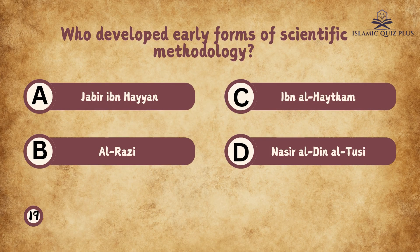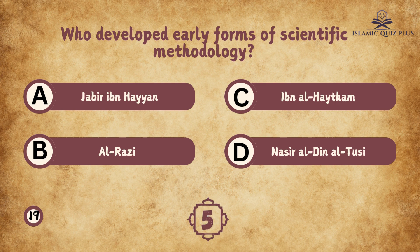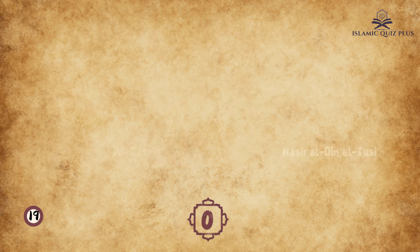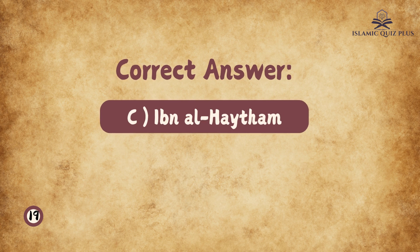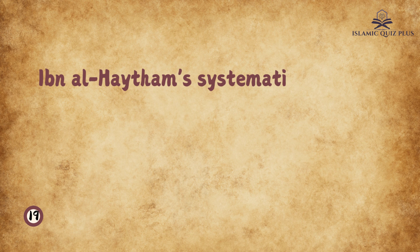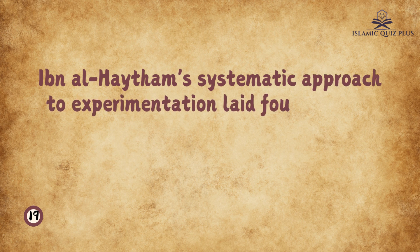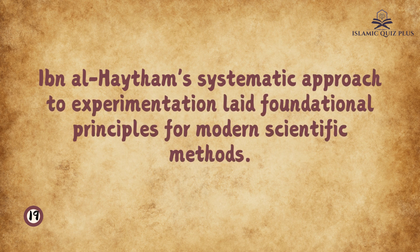Question 19: Who developed early forms of scientific methodology? A. Jabir ibn Hayyan, B. Al-Razi, C. Ibn Al-Haytham, D. Nasir al-Din al-Tusi. The correct answer is C. Ibn Al-Haytham. Ibn Al-Haytham's systematic approach to experimentation laid foundational principles for modern scientific methods.